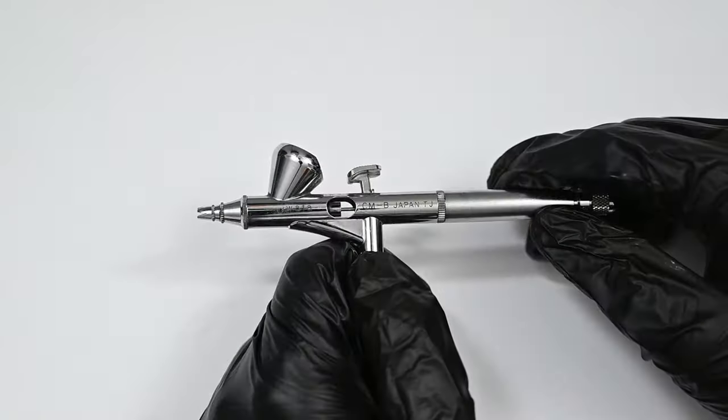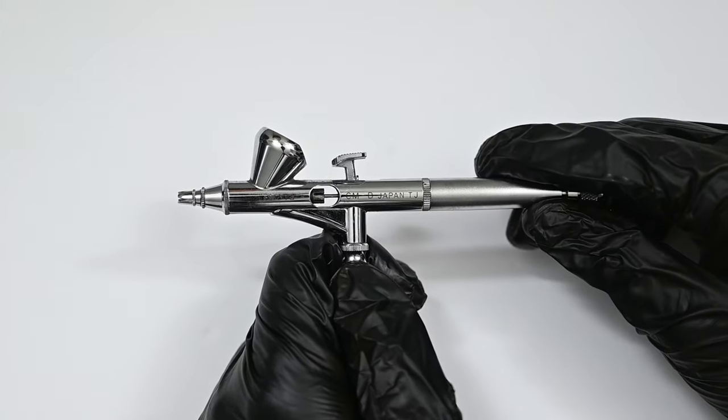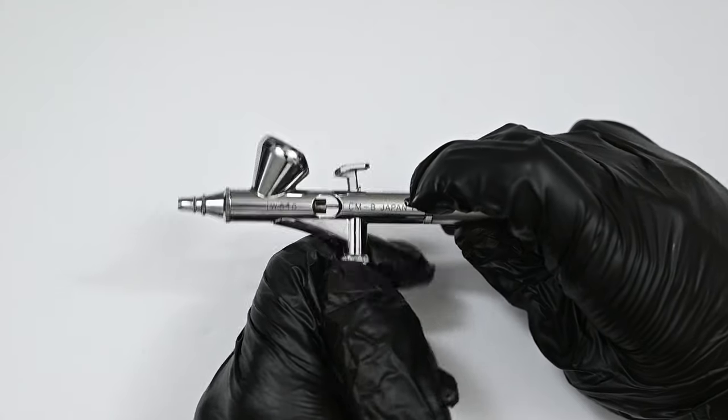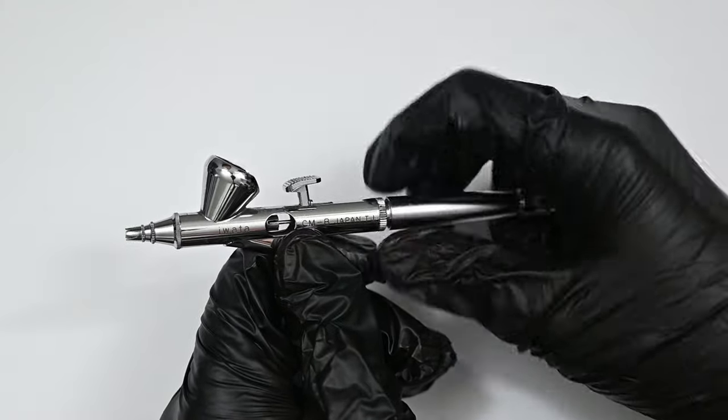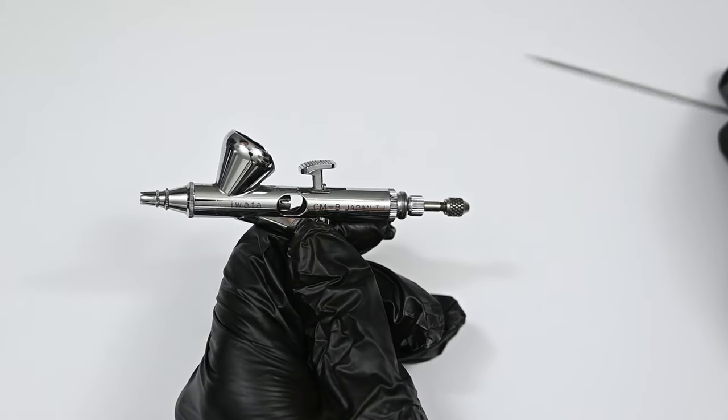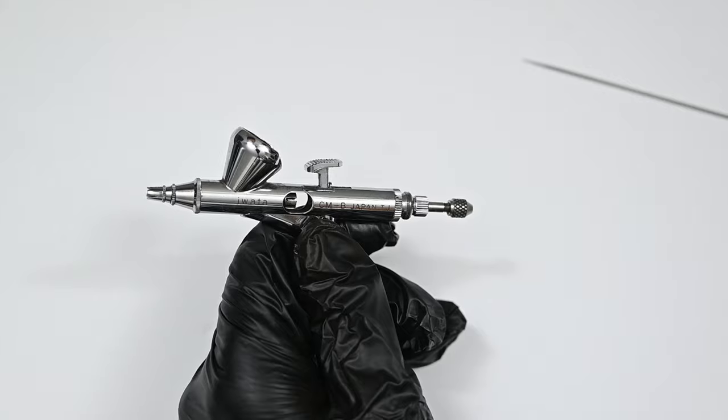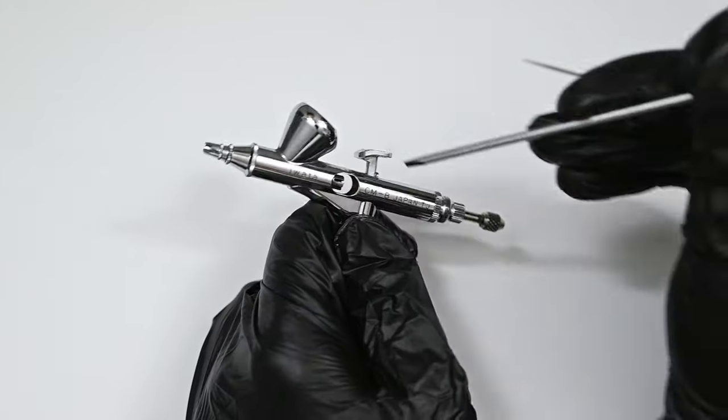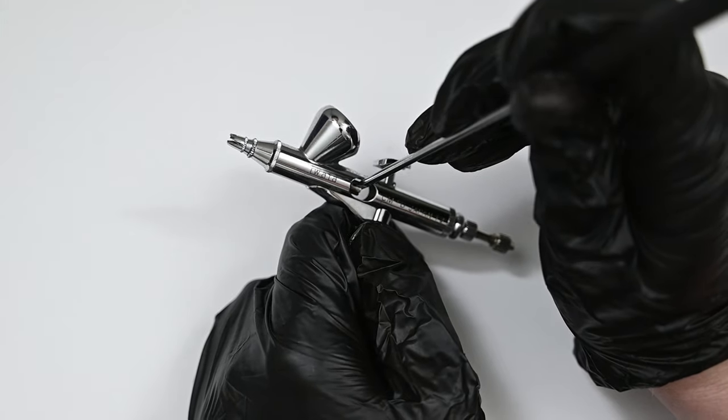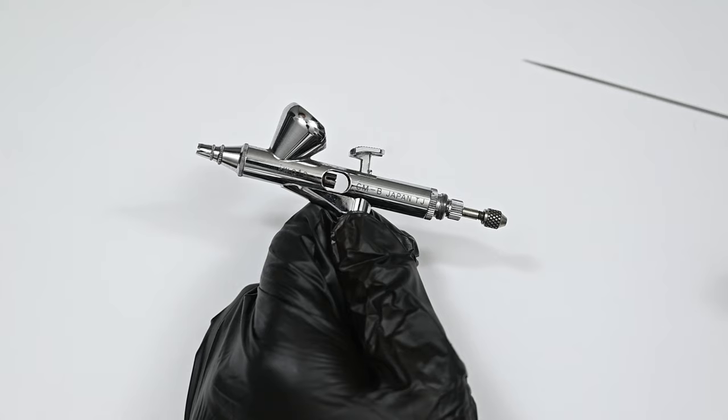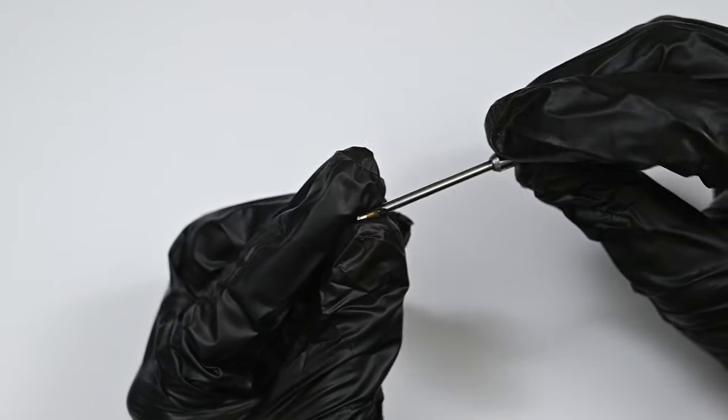On some airbrushes like this Iwata Micron, you'll notice that there's a small cutout or window in the body of the airbrush. I love this feature because what it allows you to do is adjust that needle packing screw without having to remove the entire back of the airbrush. What I like to do is remove the needle and then just use a very small flathead screwdriver. This needle packing screw has some slots on the side of it. You could just place that screwdriver in and adjust it as needed. It's such a simple little feature, but I absolutely love it.